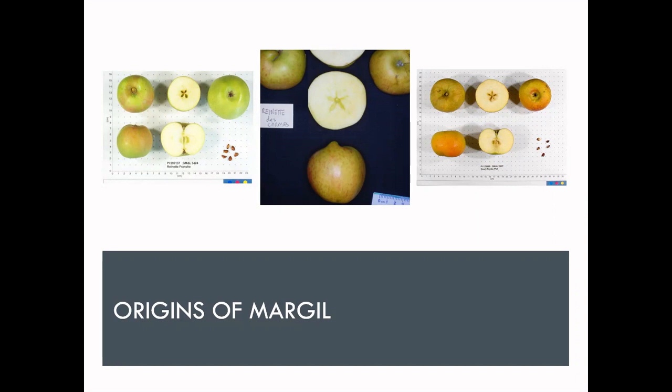Now there are some possible cultivars, just based on morphology, that could pertain and act as possible ancestors to this cultivar: Reinette Franche, Reinette de Champagne, and Cœur de Pigeon Platt.